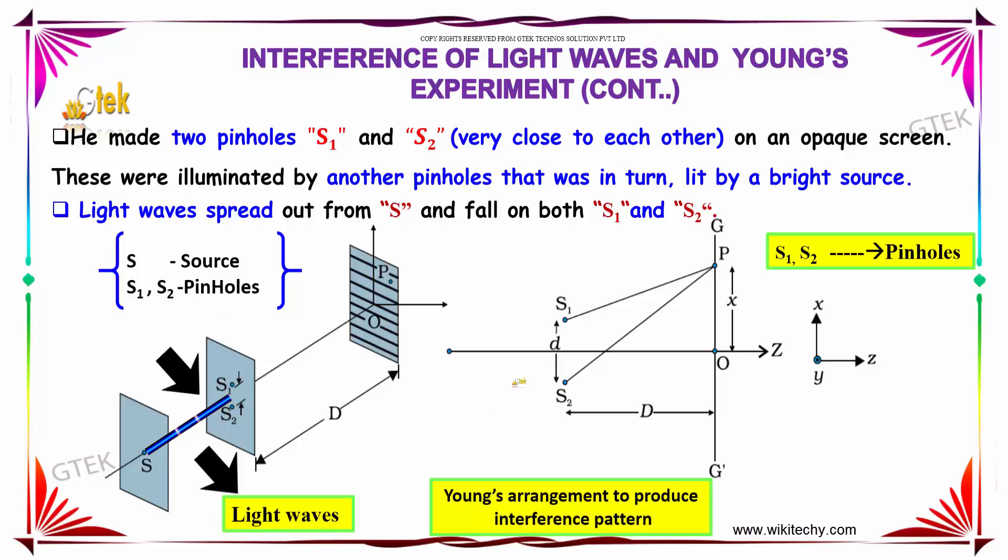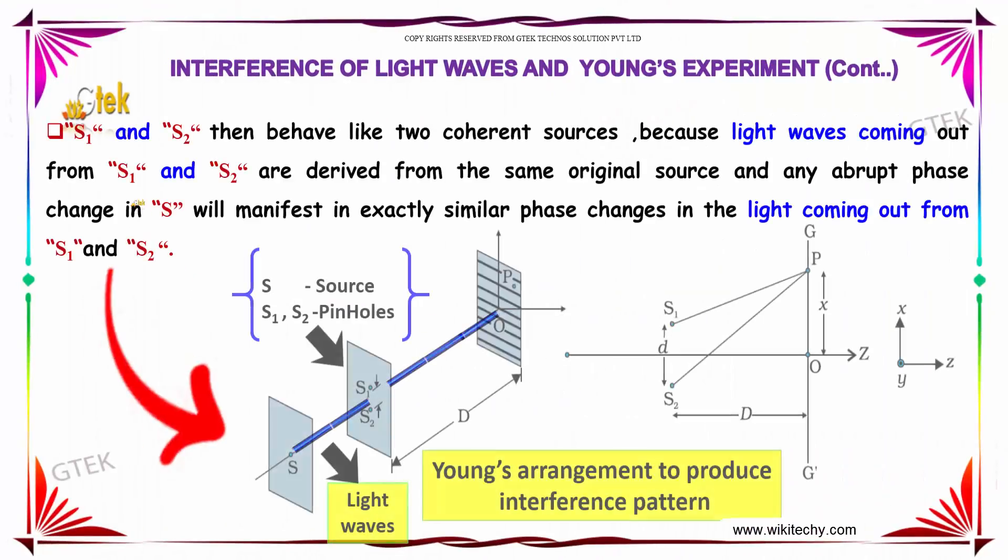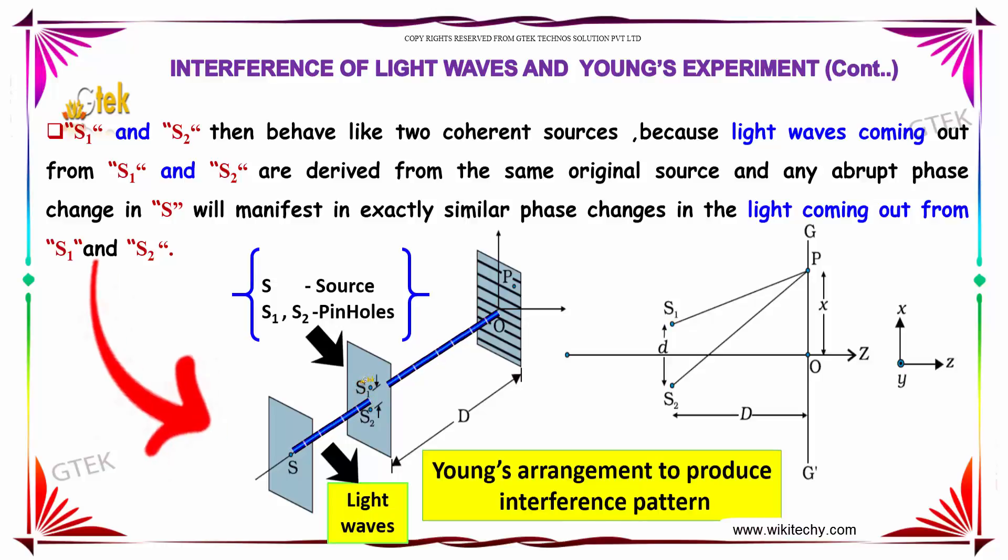This is of distance D separated. S1 and S2 then behave like two coherent sources because light waves coming out from S1 and S2 are derived from the same original source. And any abrupt phase change in S will manifest in exactly similar phase changes in the light coming out from S1 and S2.